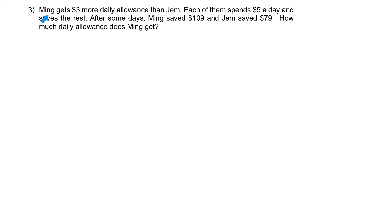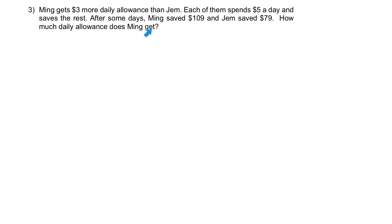Question 3. Ming gets $3 more daily allowance than Jem. Each of them spends $5 a day and saves the rest. After some days, Ming saved $109 and Jem saved $79. How much daily allowance does Ming get?